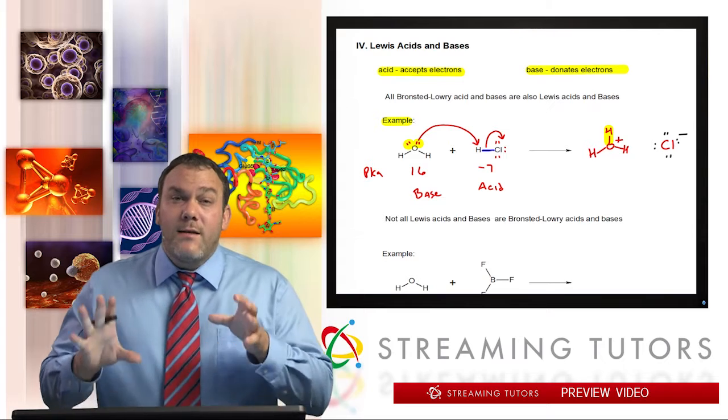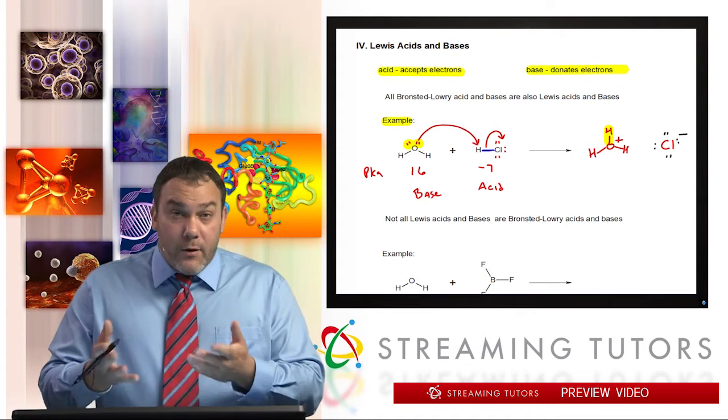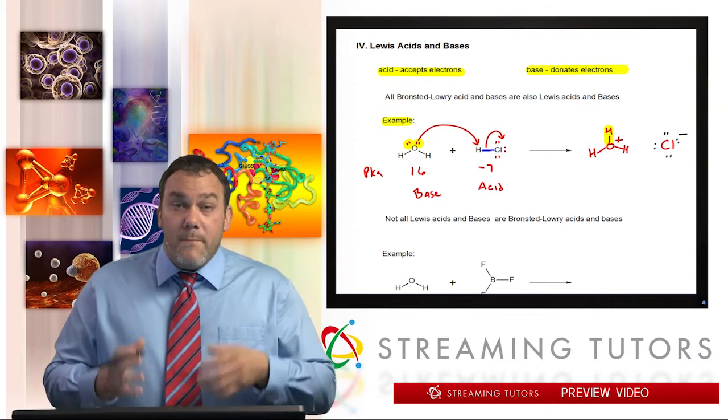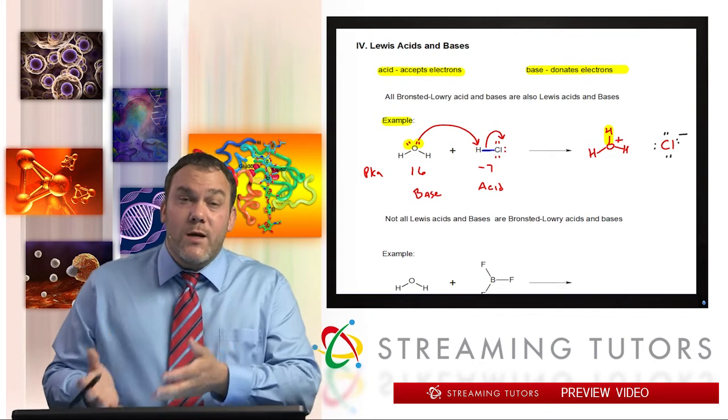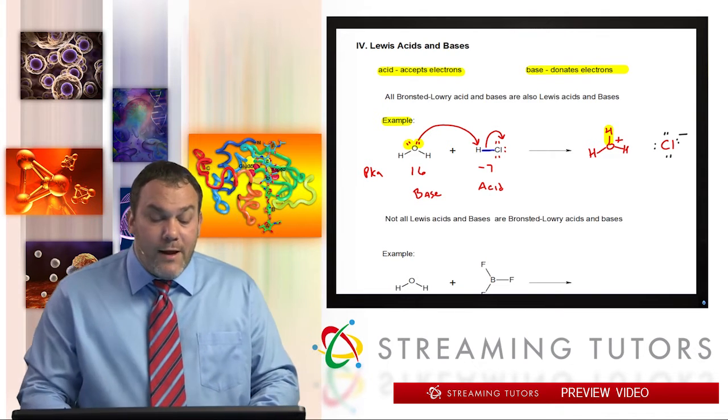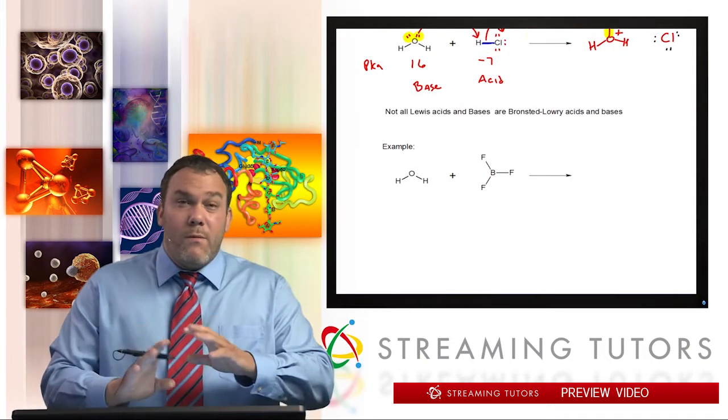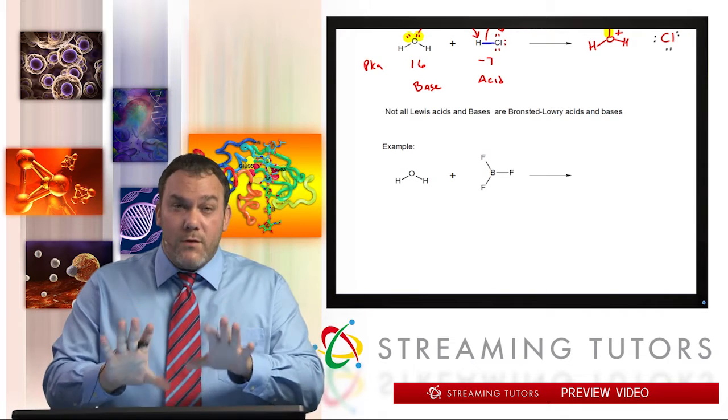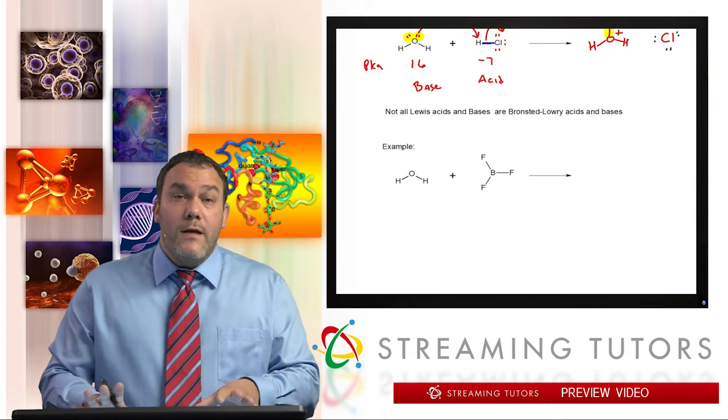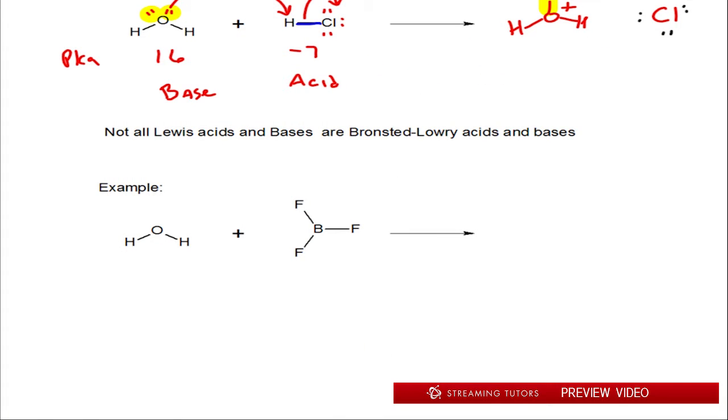This follows Bronsted-Lowry theory because we're moving a proton around. But it also follows Lewis acid-base theory because we're giving electrons to someone and something is accepting them. We could see this as a Bronsted-Lowry or a Lewis definition. Remember I said that, and this is going back, everything here is review. If you notice, there's nothing new so far, and pretty much everything in this whole video is review. Not all Lewis acid-base are going to be Bronsted-Lowry acid-base, and here's an example of that.